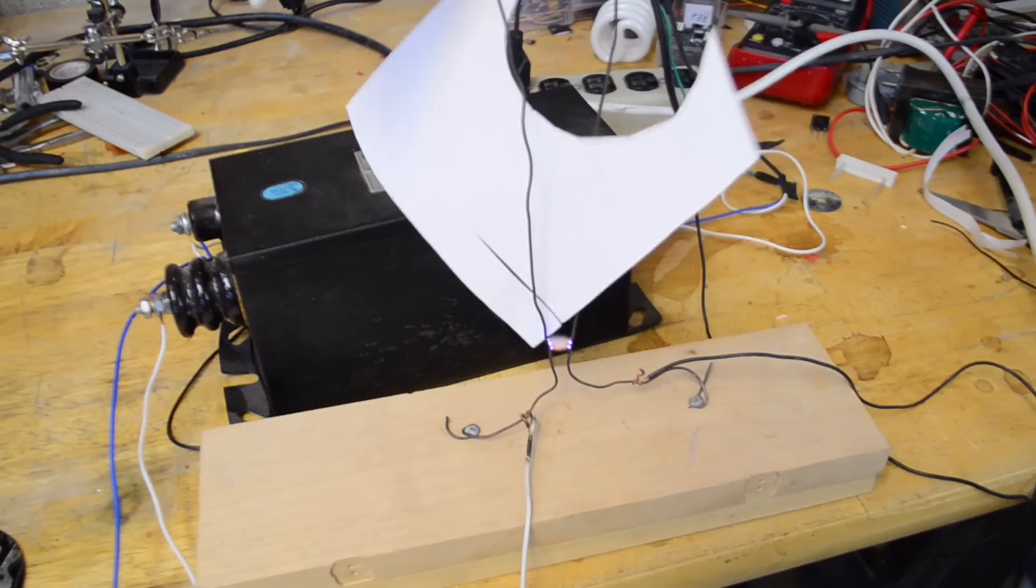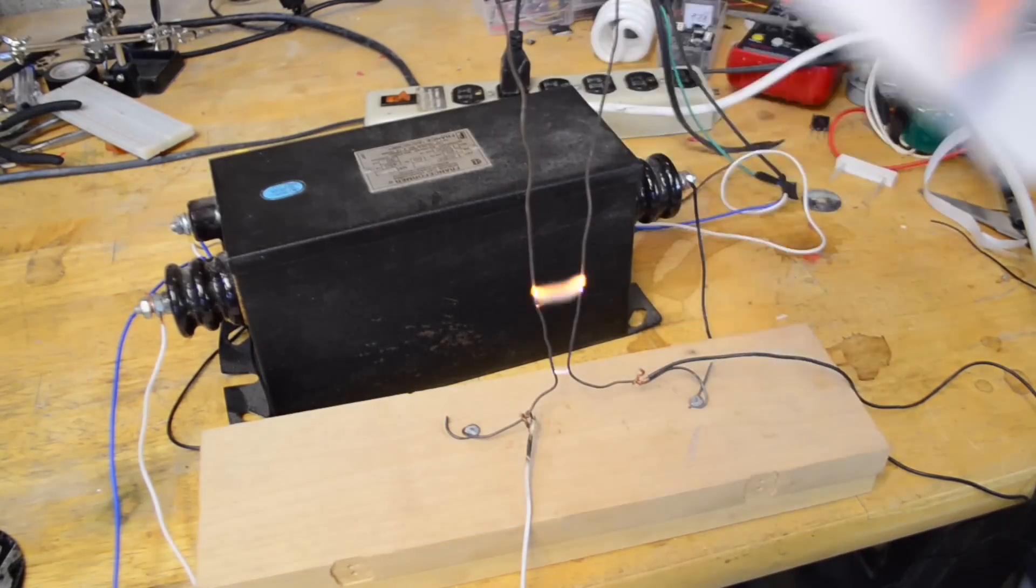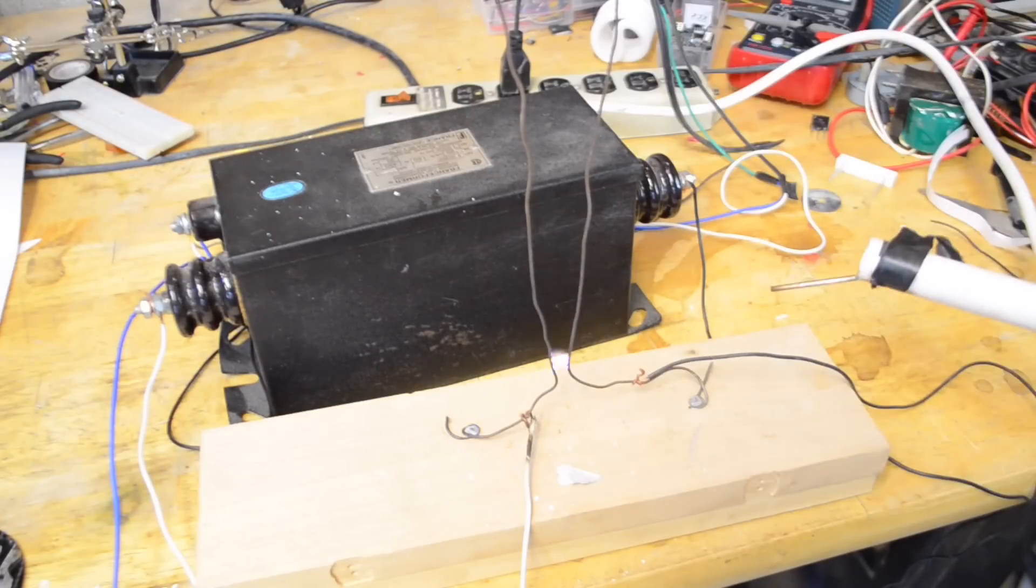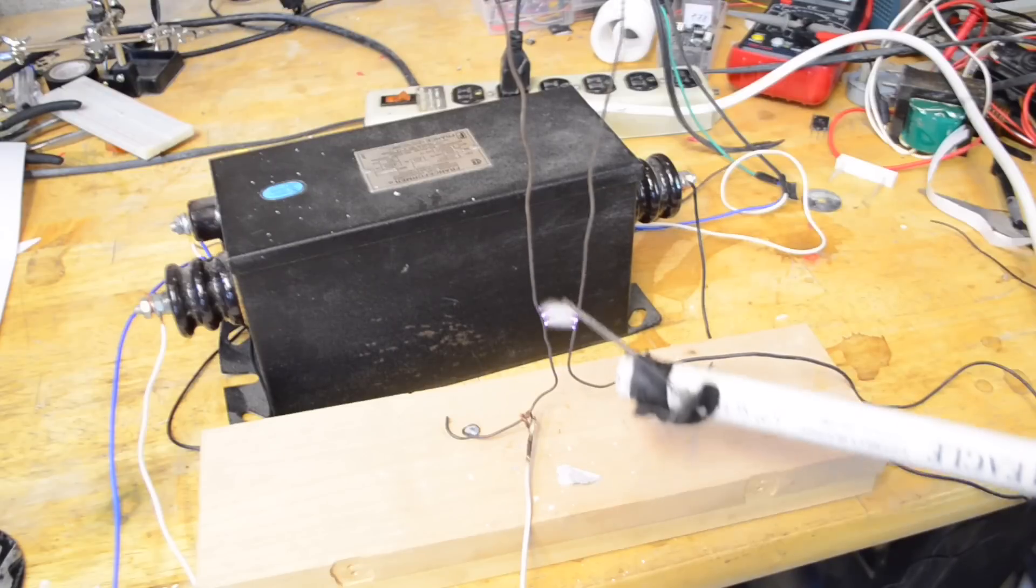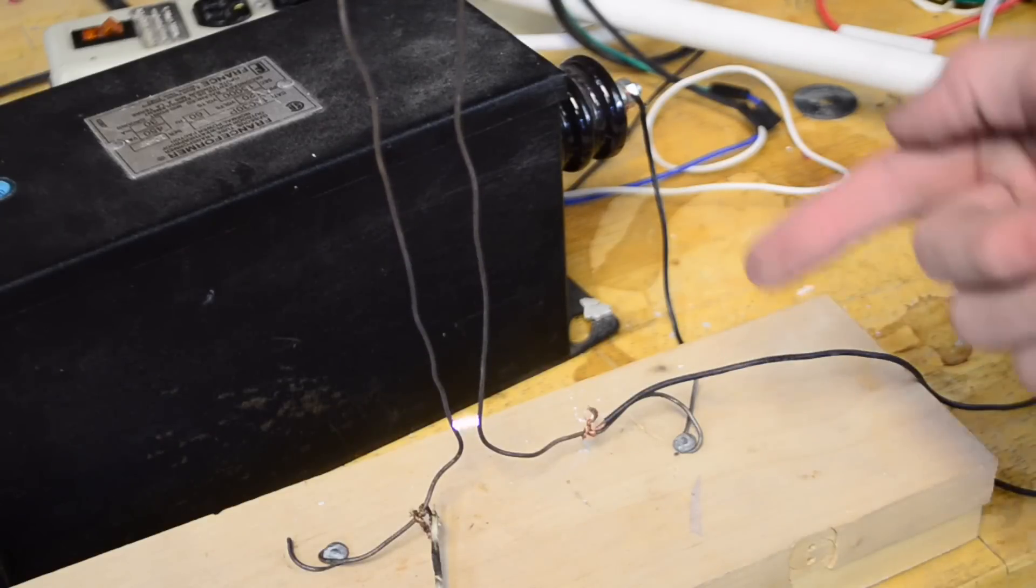As you can see, the arc is easily hot enough to burn paper. Now with the microwave oven transformer I showed a second ago, after leaving it running for just a little bit, it would get pretty warm and might overheat. However, I've left this Jacob's Ladder running before for about 40 minutes and it was barely warm. So this is definitely a good option if you're planning on making a Halloween decoration like I am. As you can see, after I straighten the wires a little bit, the arc is running a lot higher up the ladder.